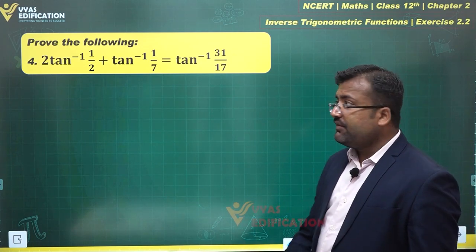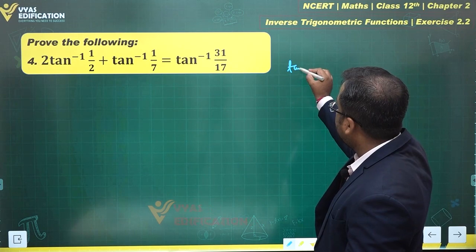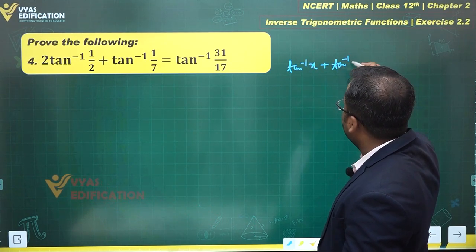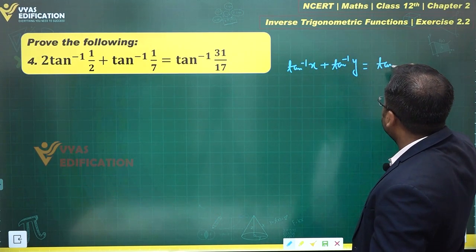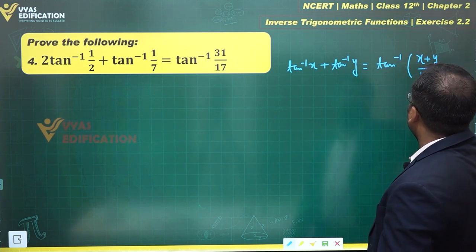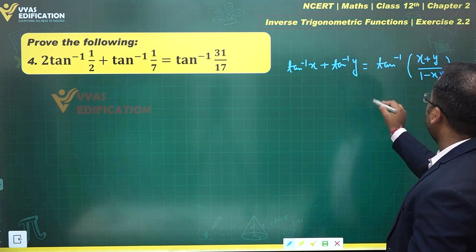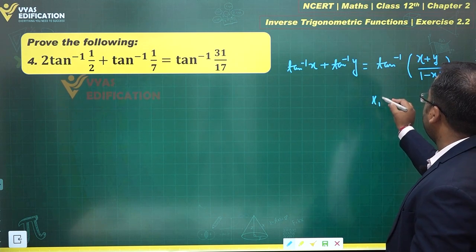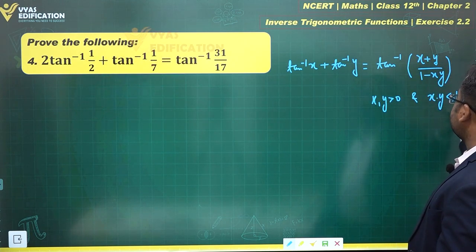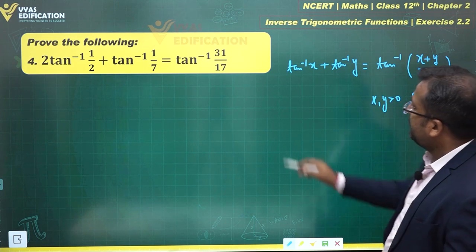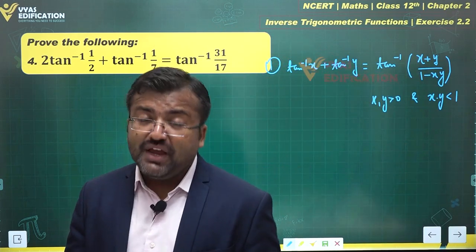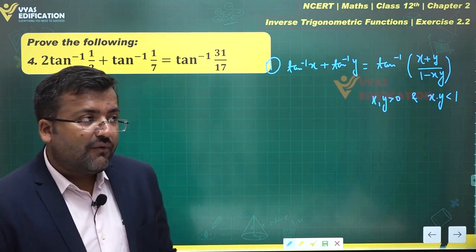The result we are aware of is that tan inverse x plus tan inverse y equals tan inverse of (x plus y) over (1 minus xy), where x, y are greater than 0 and x times y is less than 1. This is one important result to remember.